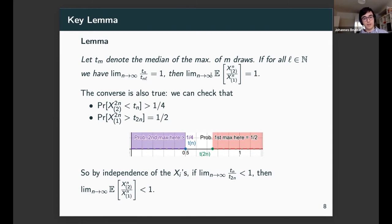This comes in form of a key lemma, where an important quantity is t_m, which we denote the median of the max of m draws. The lemma says that if for all l, we have that the limit of this fraction of medians, t_n over t_{nl}, goes to 1, then the limit of the expectation of the quantity we're interested in, X_2 over X_1, or the second largest over the largest bid, equals 1. This seems only useful for k equals 1, but actually it works for k constant. A quick intuition: for l large enough, we can have this interval t_n, t_{nl} containing both X_2 and X_1 with high probability for all n. As n goes to infinity, if we assume this fraction equals 1, t_n over t_{nl}, then we have the result we require for the expectation.